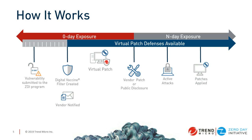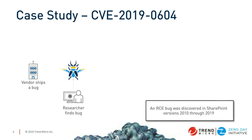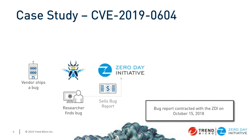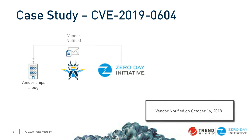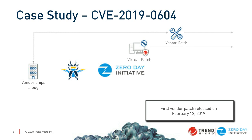Let's look at a couple of case studies. The first is a great one because it affected a lot of products. An independent researcher found a SharePoint bug affecting all versions of SharePoint. We purchased it on October 15th, 2018 and notified Microsoft on October 16th. Our virtual patch shipped December 27th, 2018, and Microsoft shipped their patch on February 12th — 67 days after the virtual patch was available.